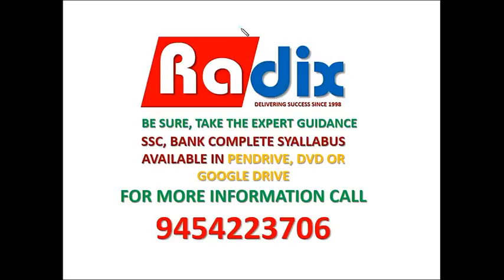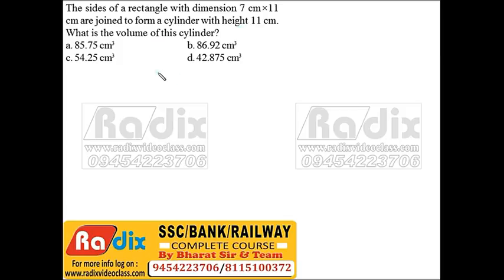Hello friends, welcome to Radix. In this session we will discuss student problems of mensuration. The sides of a rectangle with dimensions 7 cm by 11 cm are joined to form a cylinder with height 11 cm. What is the volume of the cylinder?